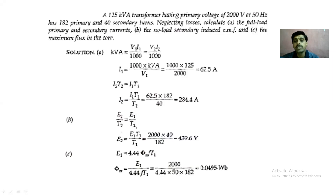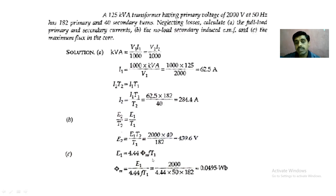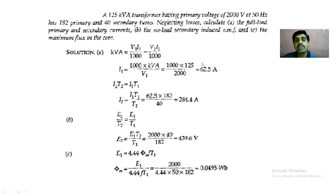For maximum flux in the core, once you know E1 or E2, use either EMF formula to get φm, since φm is common to both sides. These problems are very basic and come from the EMF equation E = 4.44·f·φm·N, the turns ratio E2/E1 = N2/N1, the current ratio I1/I2 = N2/N1, and the fact that KVA rating is the same on both sides. By applying these, we can get solutions to all these basic problems.